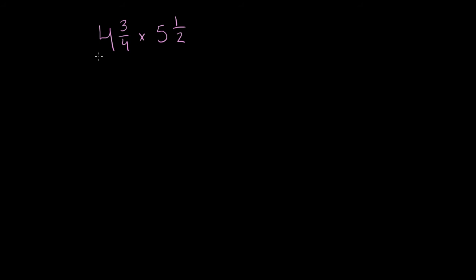To turn this into an improper fraction, 4 and 3 fourths, 4 is the same thing as 16 over 4. And then we're going to add another 3 fourths. So this part right over there is the same thing as 4 plus 3 fourths. 4 is the same thing as 16 over 4 plus 3 fourths. And so if I add these two, I get 19 over 4. So 4 and 3 fourths is the same thing as 19 over 4.